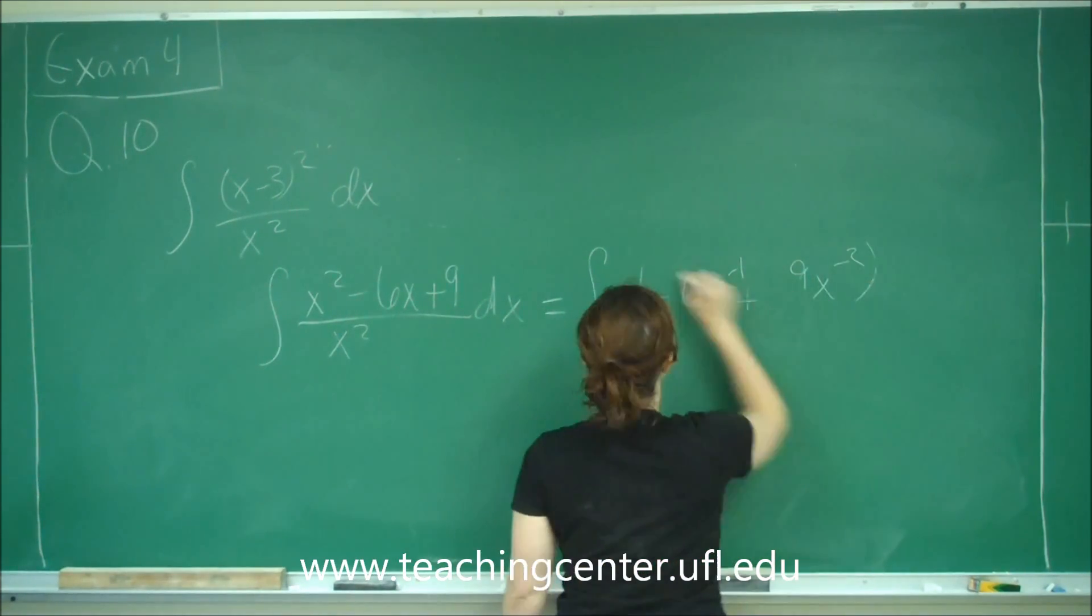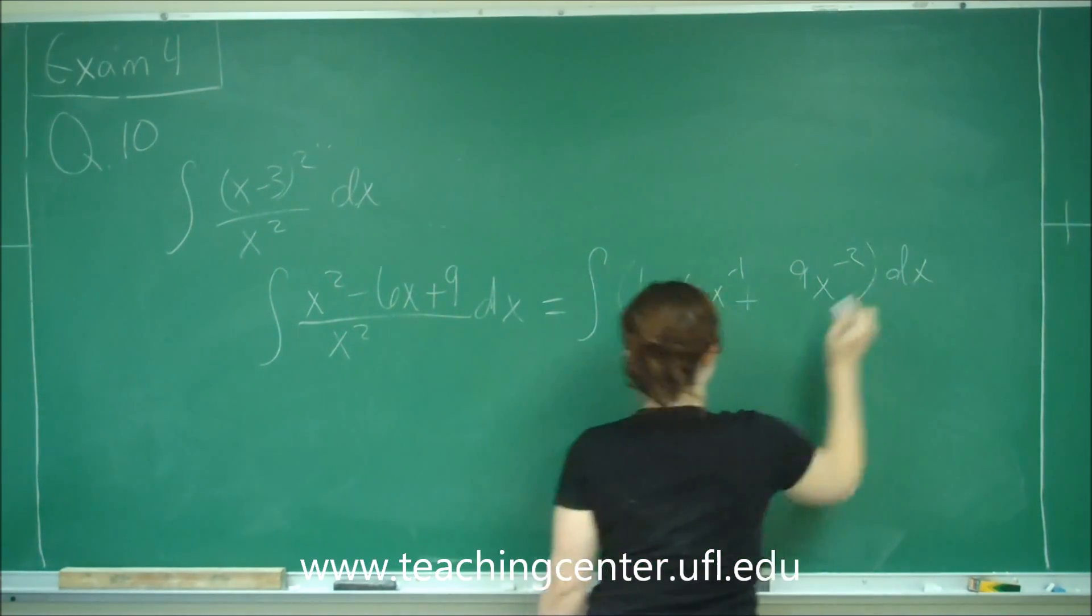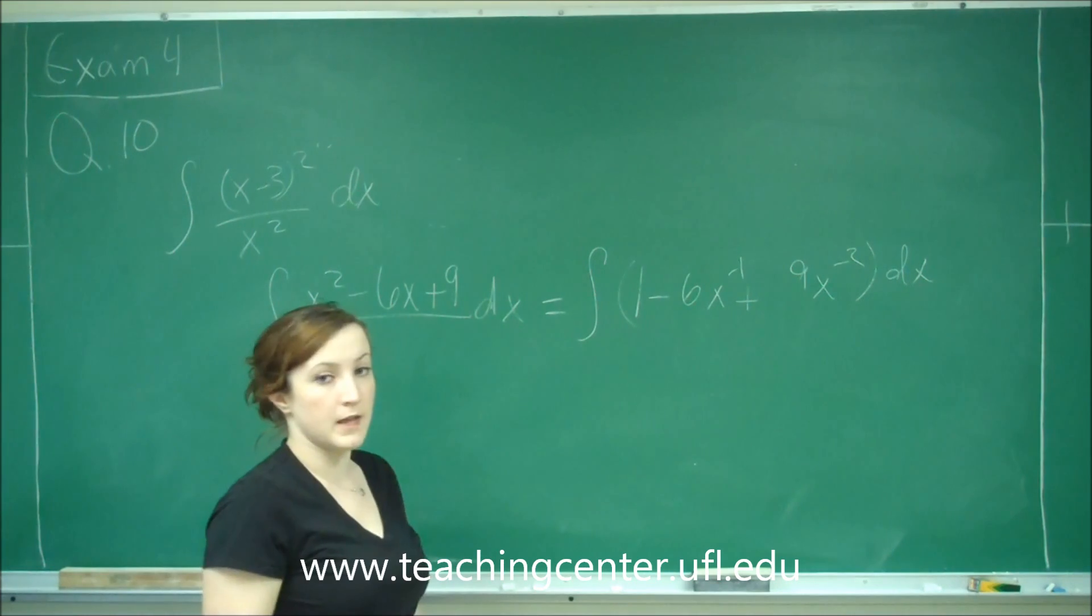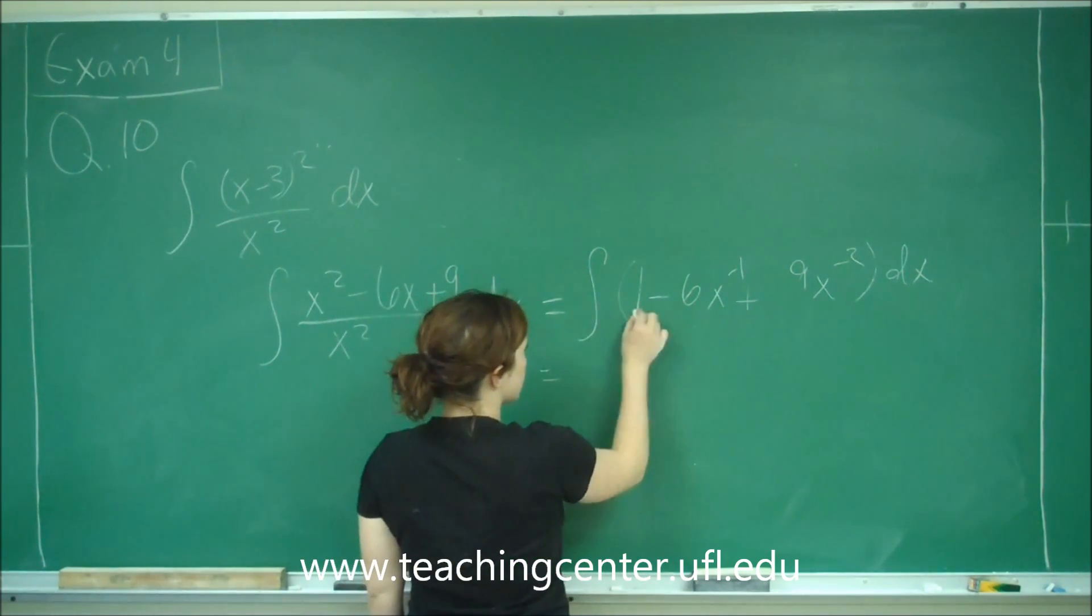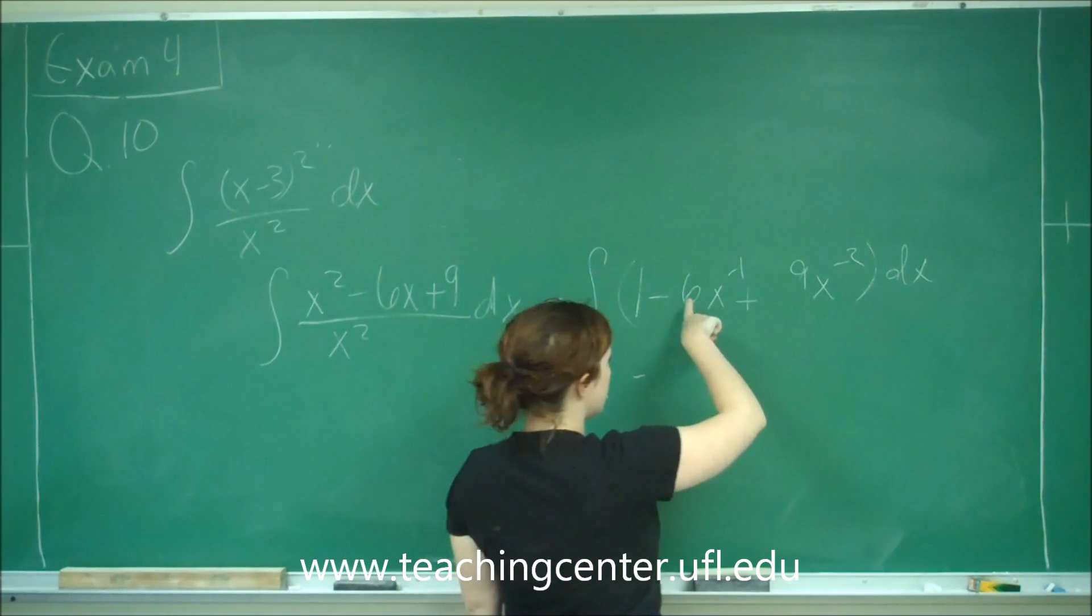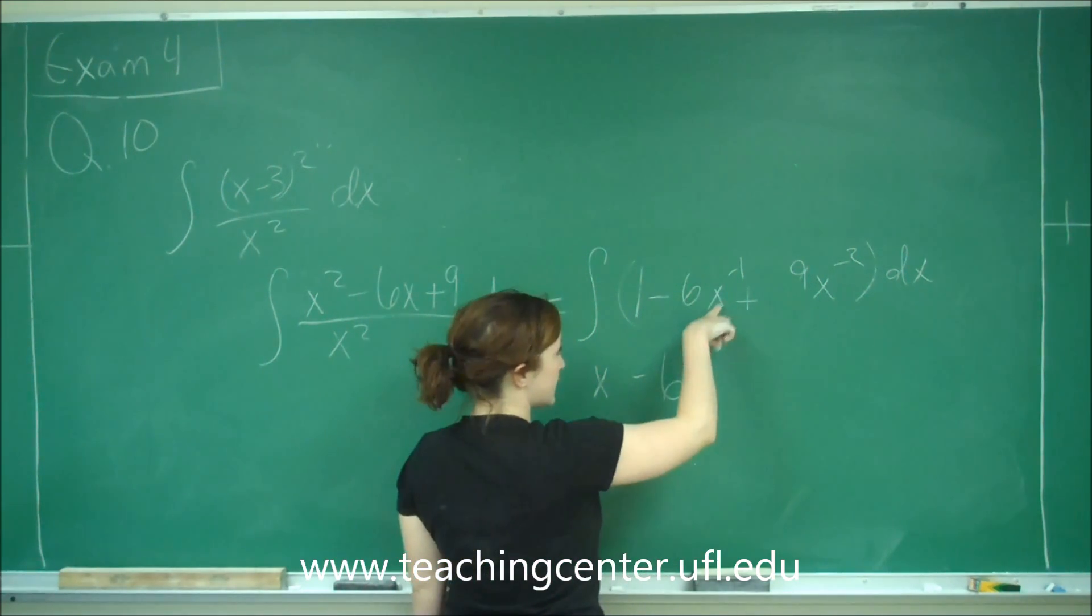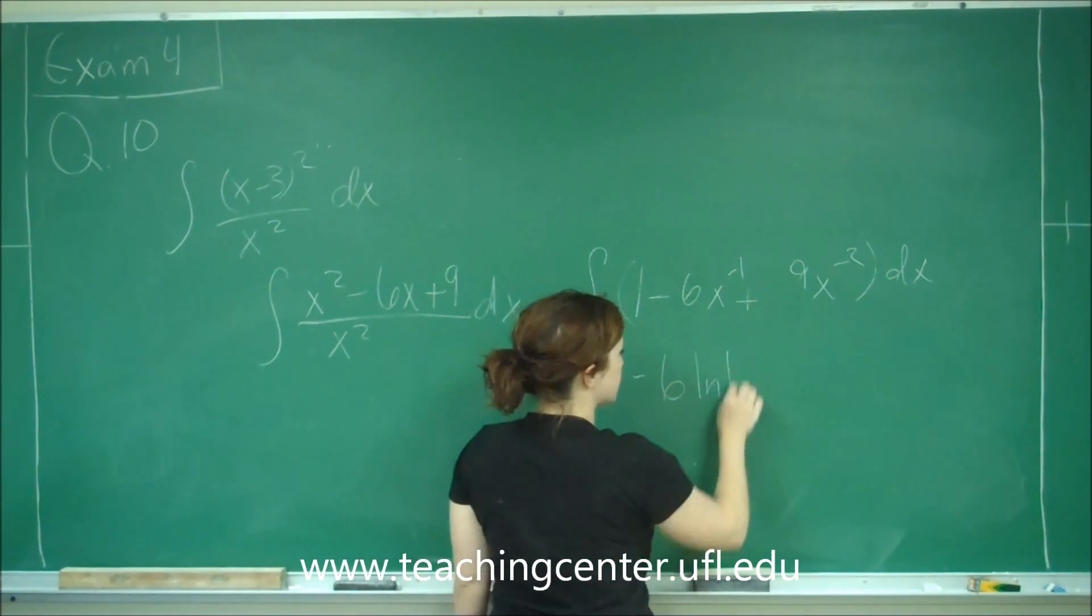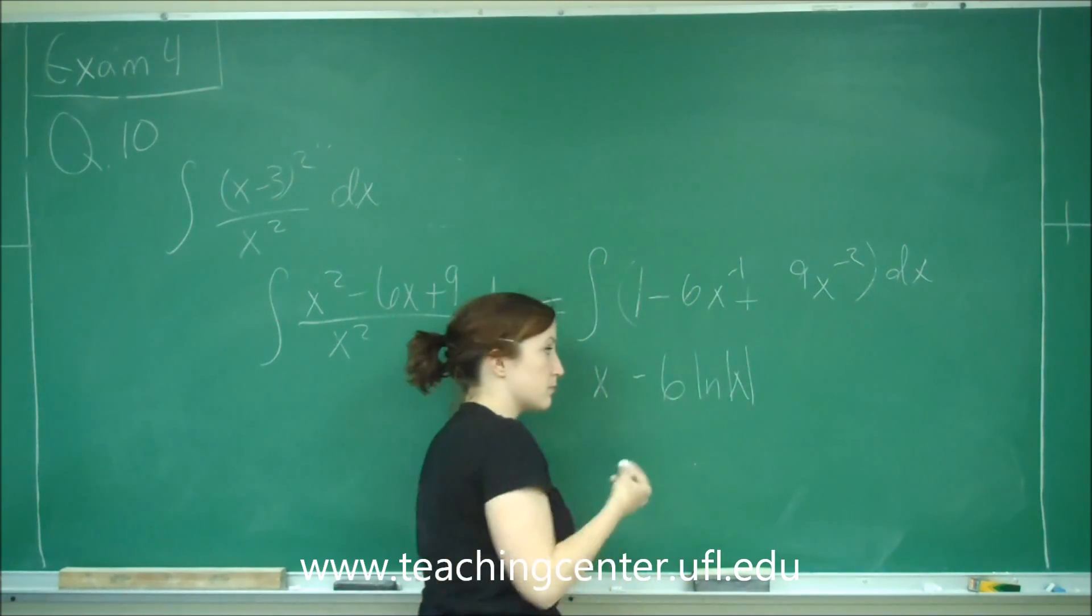So now I have to take the integral of that, much easier. The integral of 1 is x, minus the integral of - you can break this 6 out - of x^(-1) is ln of the absolute value of x. And that's just a rule that you have to remember.